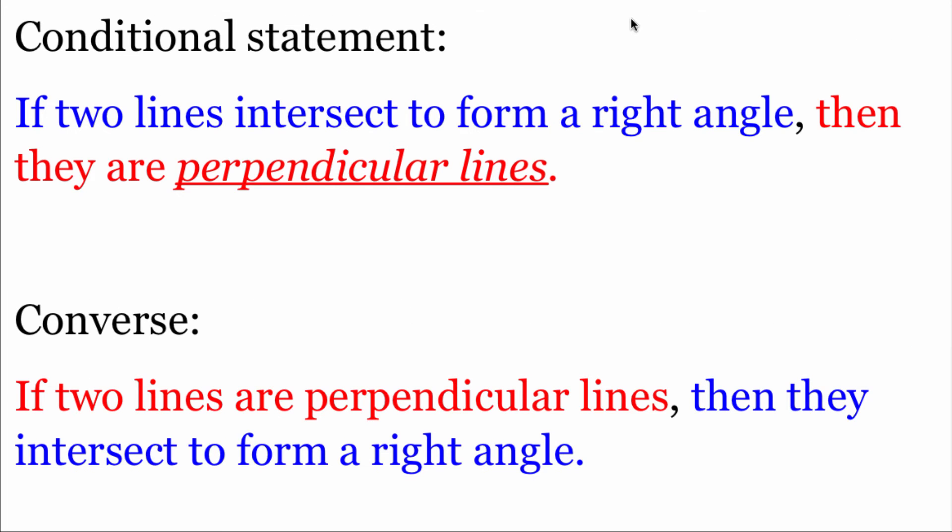Taking a look at the definition of perpendicular lines: the conditional statement says, if two lines intersect to form a right angle, then they are perpendicular lines. The converse flips those around: if two lines are perpendicular lines, then they intersect to form a right angle. Both of these mean exactly the same thing — they are equivalent statements because both are true. Perpendicular lines make right angles.